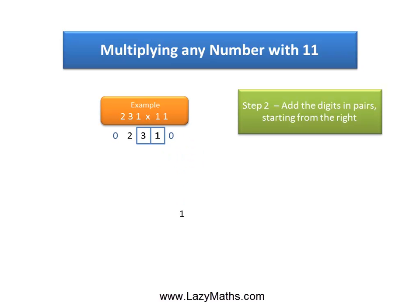The next pair is 3 and 1. We take 3 plus 1, we get 4. The next pair is 2 and 3, and we get 2 plus 3 is 5. And lastly, we get 0 and 2. 0 plus 2 equals 2.